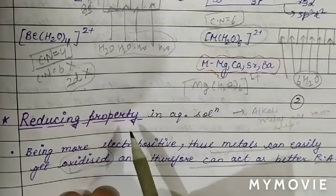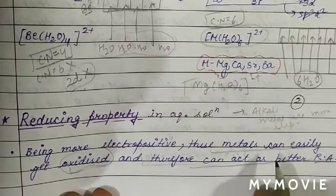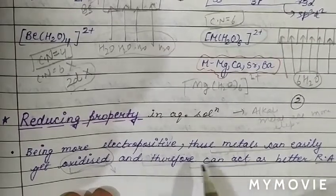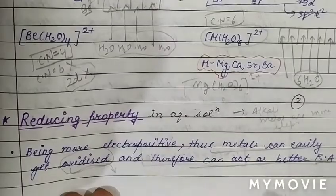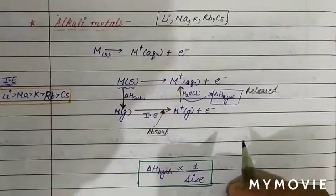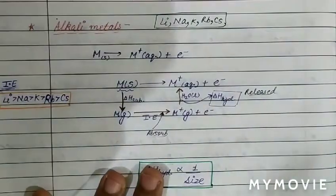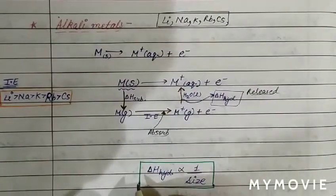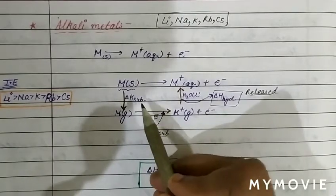The electropositive character of alkali metals is high, therefore these metals can easily get oxidized due to high electropositive character. Alkali metals are lithium, sodium, potassium, rubidium, and cesium. Reducing property mainly depends on three types of energy — first is sublimation energy.